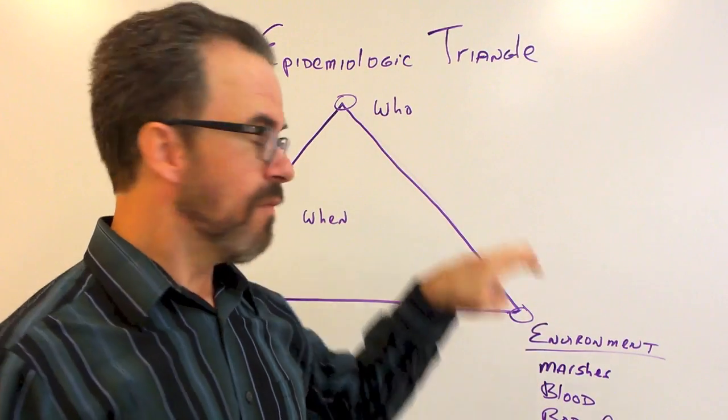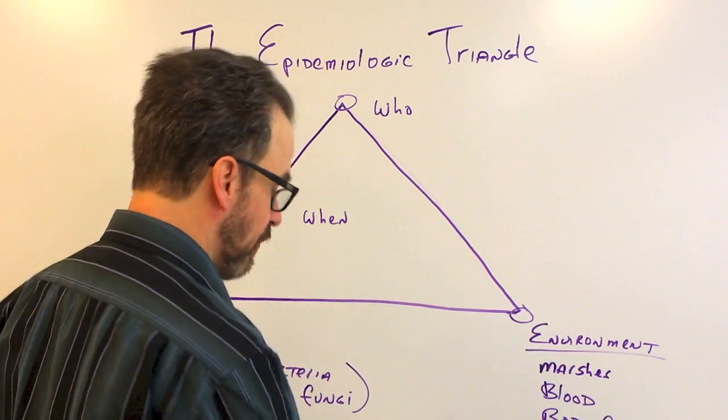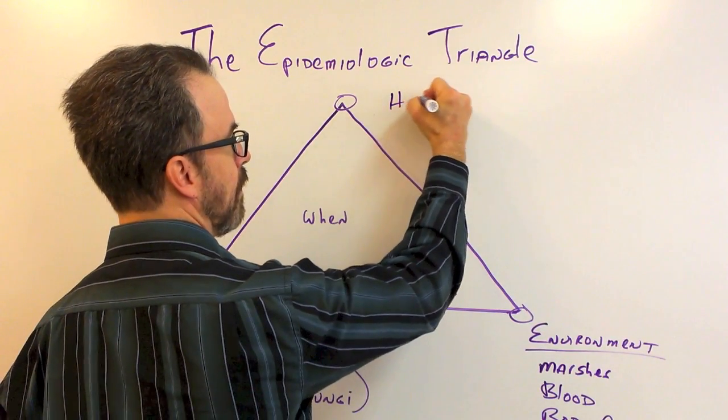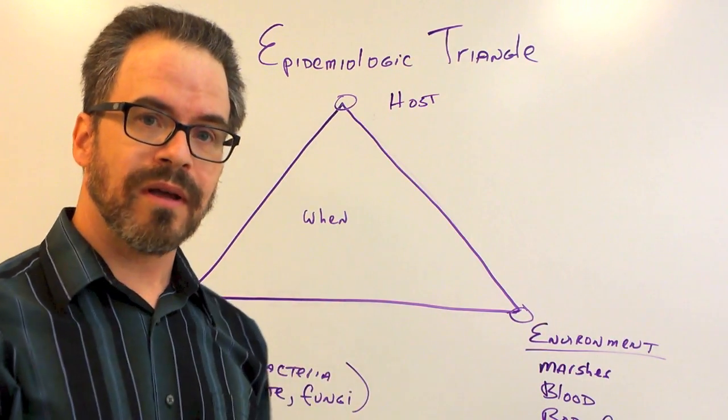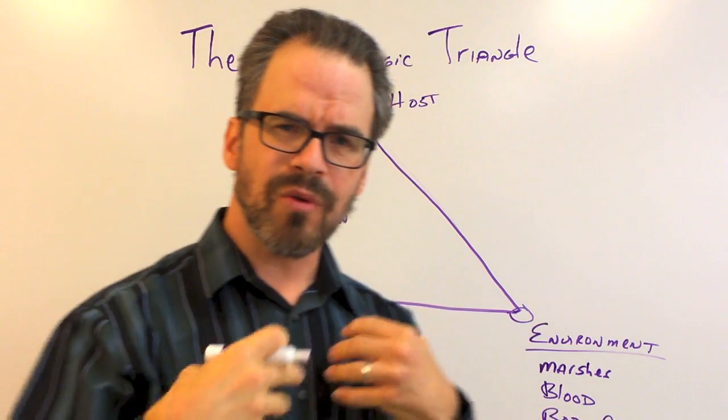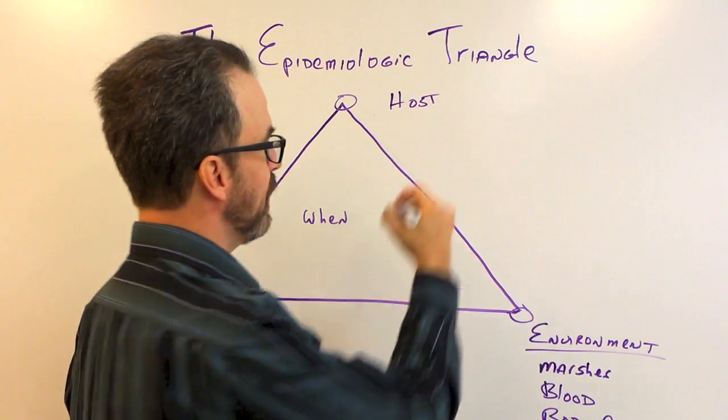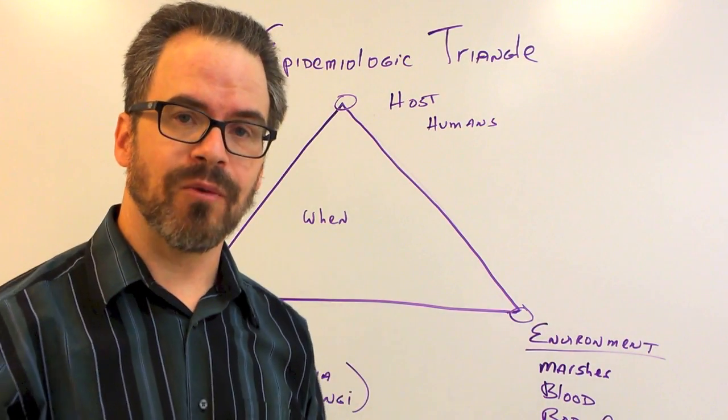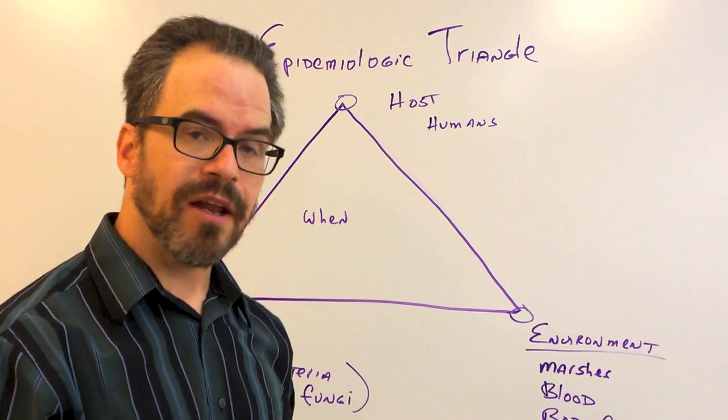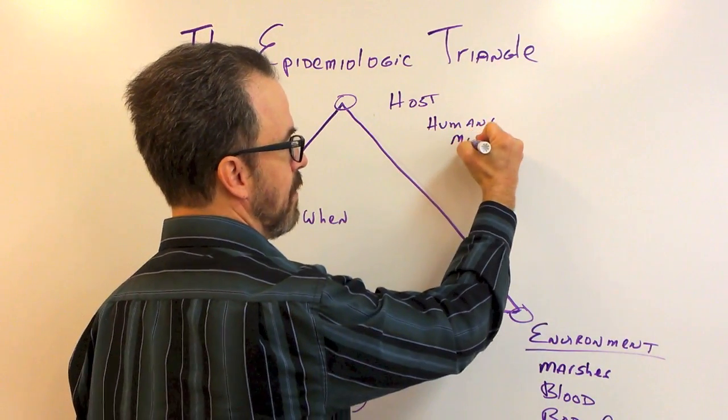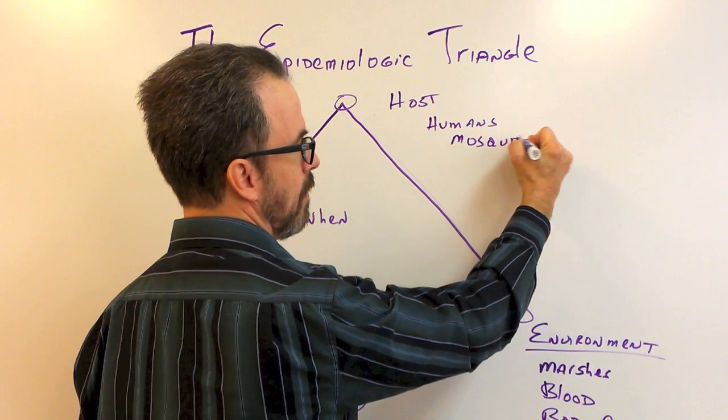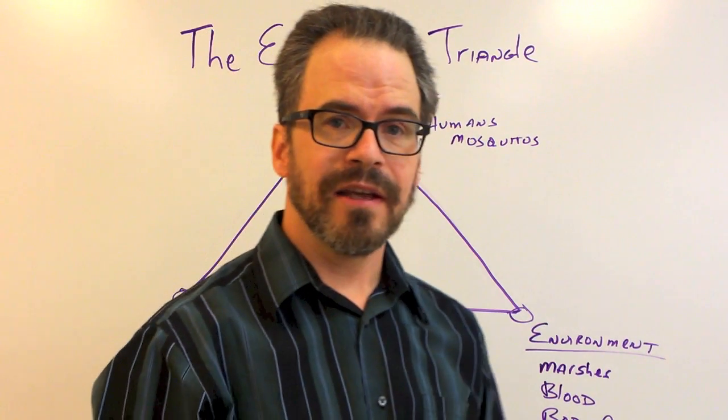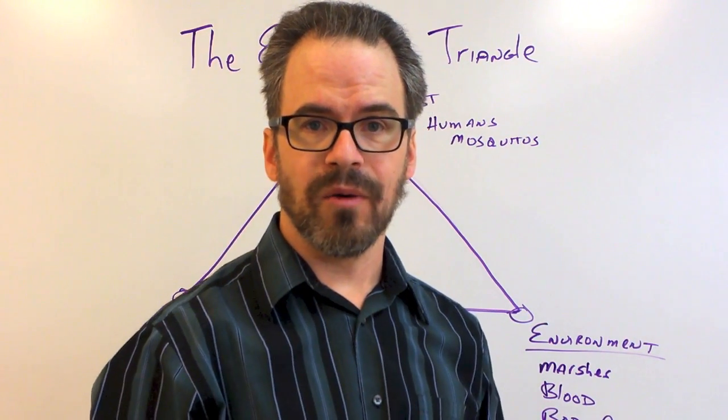The who vertex of this triangle refers to the host. Who is affected by the disease? Who harbors the disease? This could be humans, or it could even be in the terms of, say, West Nile mosquitoes, for example. It could be, if we're talking about influenza, it could possibly be swine or chickens.